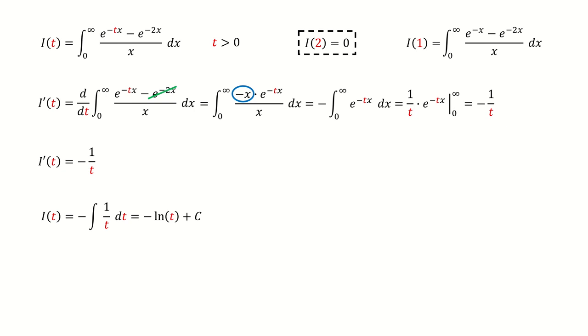Next, we can solve for the function i. Now we use the initial condition to determine the constant c. So c equals ln(2).